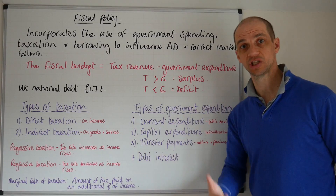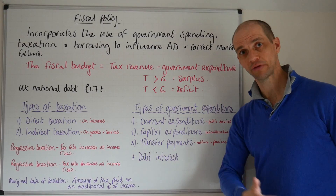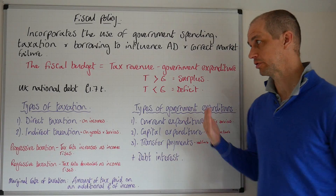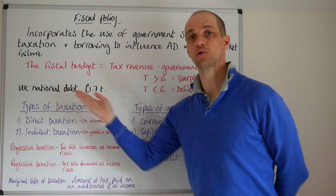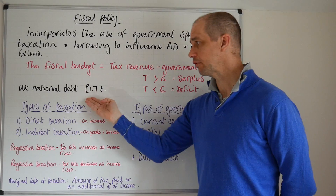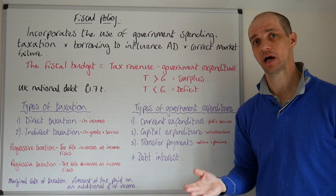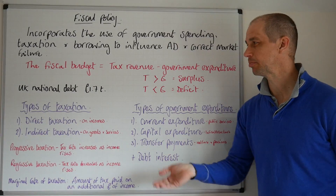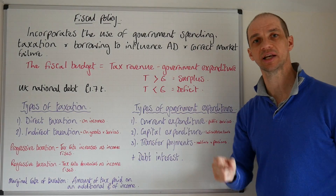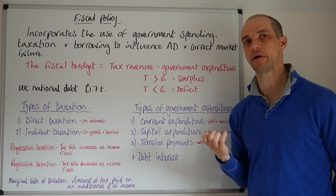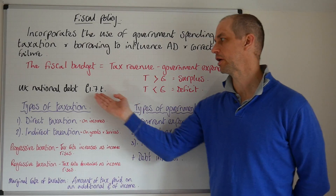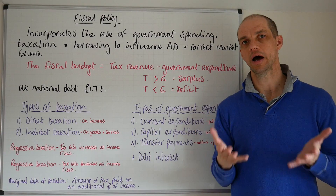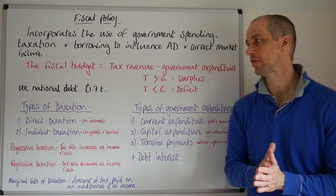We still run that deficit year after year, and of course that deficit accumulates into a total national debt figure. For the UK economy, this is at £1.7 trillion, which is about 85–86% of the size of our economy — the size of GDP. So quite a substantial national debt.